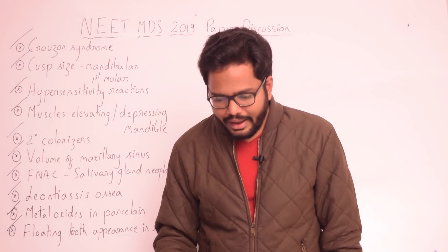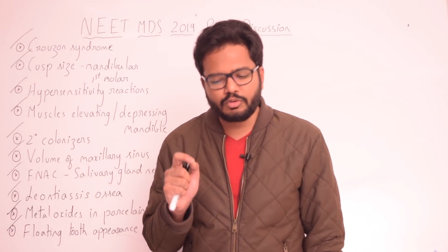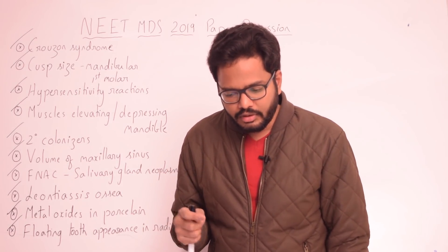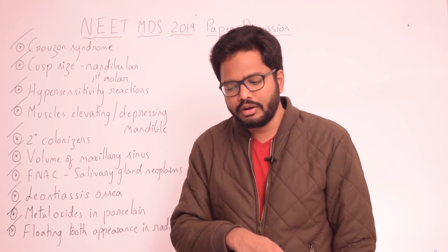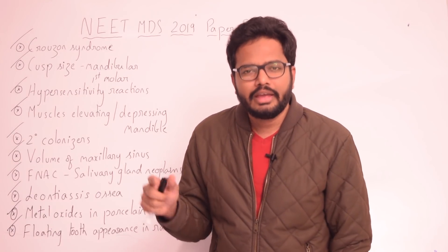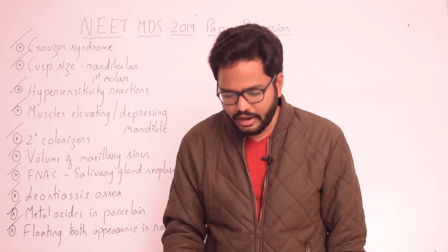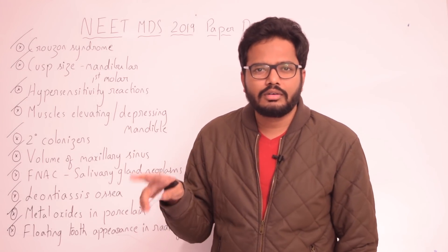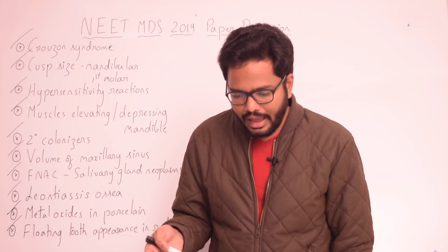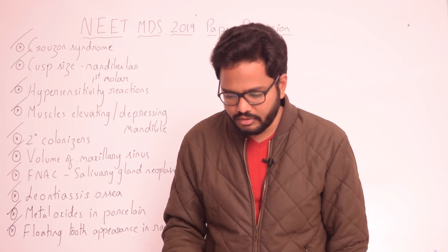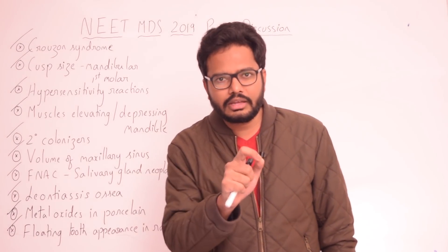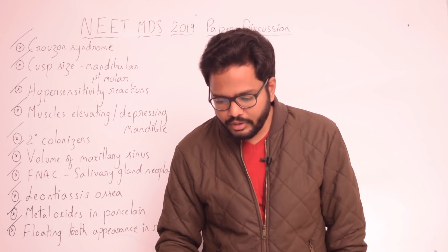Floating teeth were originally described in Hand-Schüller-Christian disease and later in eosinophilic granuloma. During the fourth and fifth decades, the opinion evolved that these conditions — along with Letterer-Siwe disease — are closely related, and they were given the common term histiocytosis X. This term was coined in 1953 to unify these three conditions.